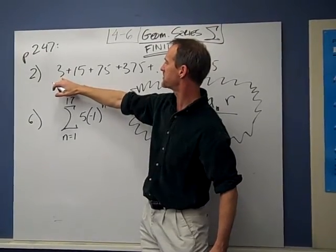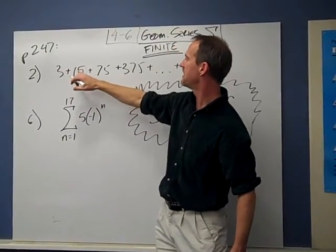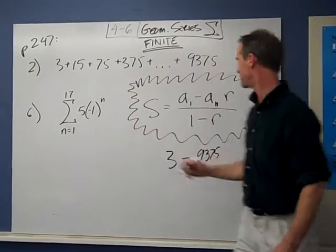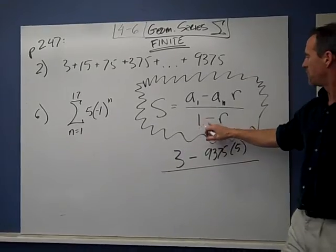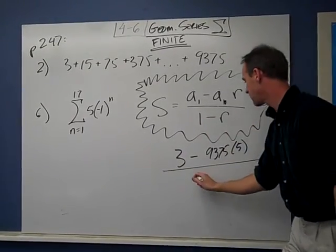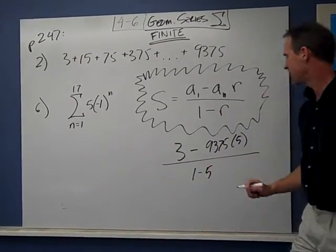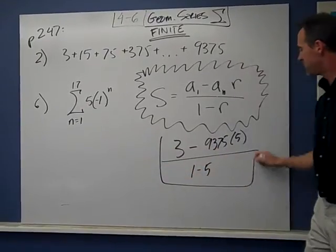It's not like the last problem. This is 3 times 5 gives me 15. 15 times 5 gives me 75. So times 5, that's what r is. All over 1 minus whatever r is. So 1 minus 5. And again, pause this if you want.